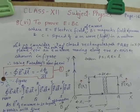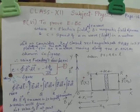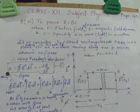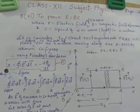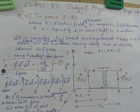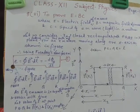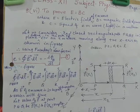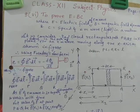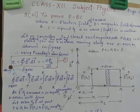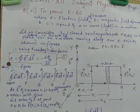Today we are going to re-discuss the derivation for E equal to BC and also the derivation for C equal to 1 by under root mu zero epsilon zero.